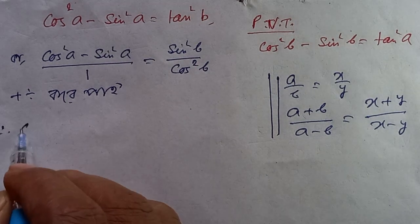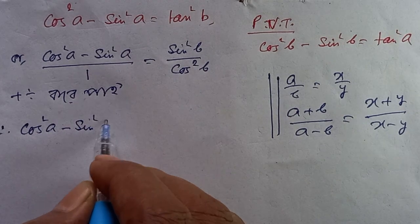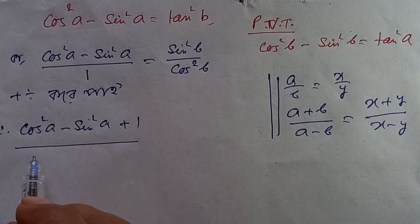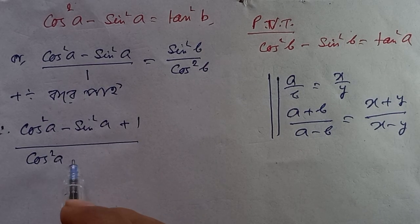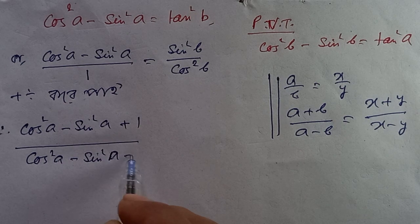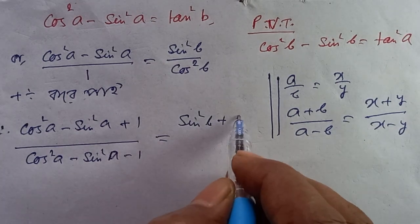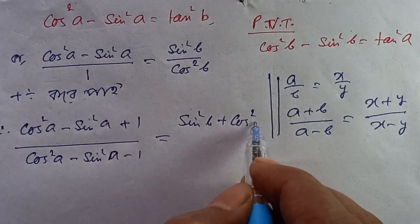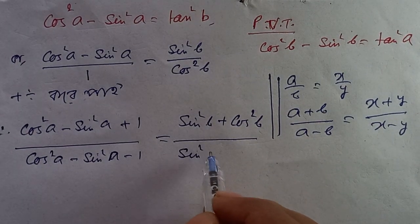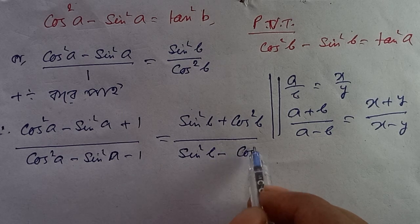Hence, cos²a minus sin²a plus 1, divided by cos²a minus sin²a minus 1, is equal to sin²b plus cos²b divided by sin²b minus cos²b.